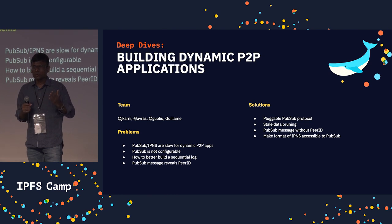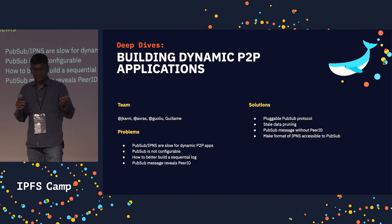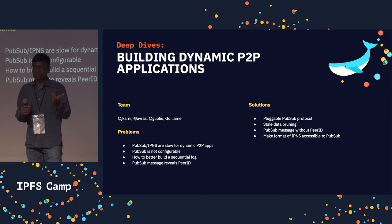Another issue is stale data pruning. When you receive a message and you have a dynamic app, you can end up with a stale message. You don't want that — it's useless — so we don't want to propagate it.